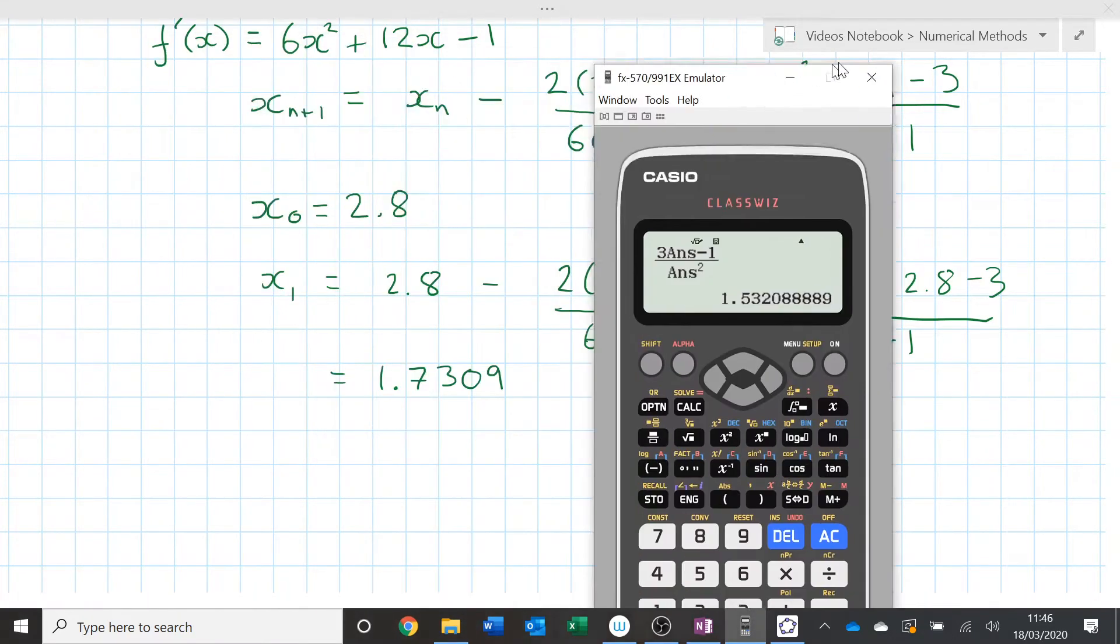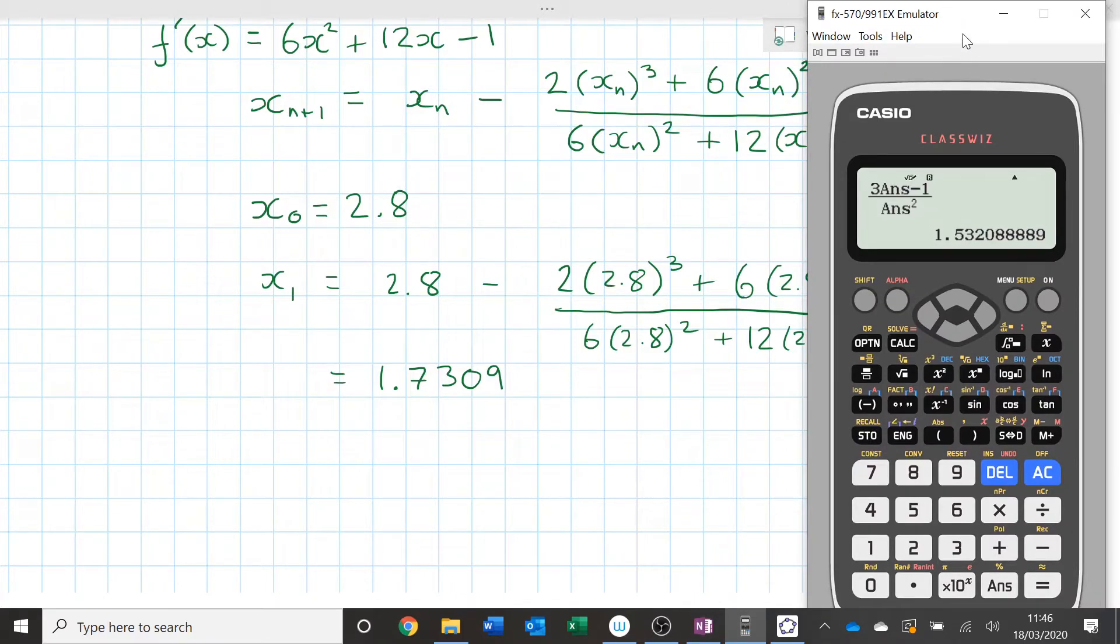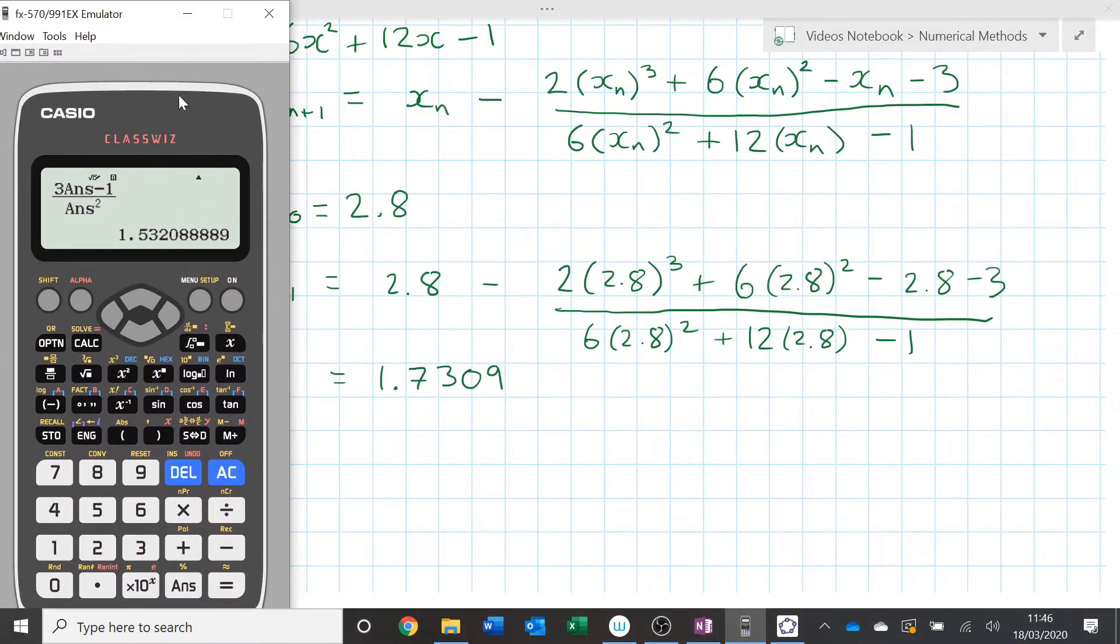I'm going to do it. I'm going to take time on this one because I think it's so easy to accidentally type these things wrong into a calculator. 2.8 is my answer. So I've set that as my answer. Now the iterative formula. Answer minus. That's my xn. So my xn is going to be answer. 2 answer cubed. Click right to make sure I don't end up in there. 6 answer squared. Minus answer. Minus 3.